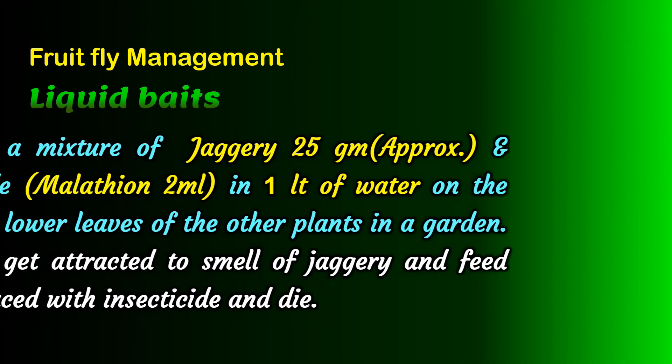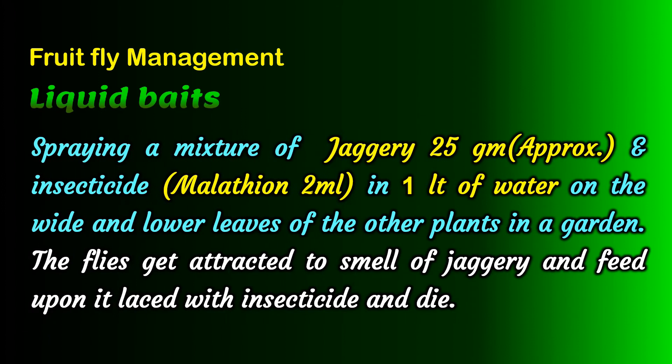Spraying a mixture of 25 grams of jaggery and 2 ml of Malathion in one liter of water on the wide and lower leaves of the plants in a garden. The flies get attracted to the smell of jaggery and feed upon it, laced with insecticide and die.